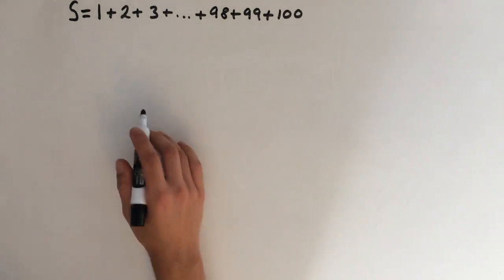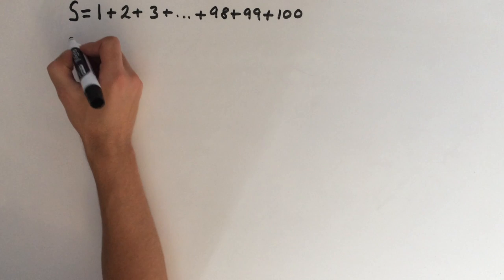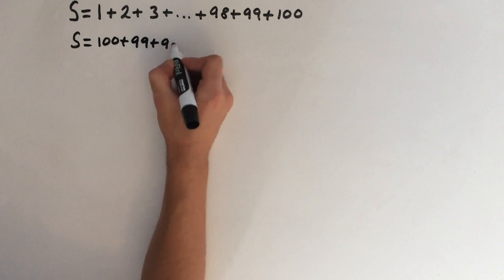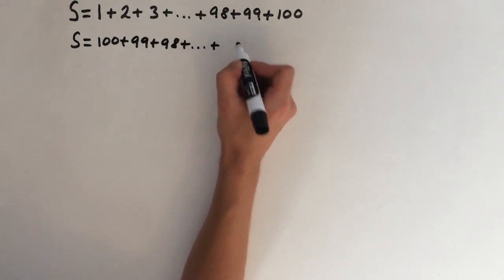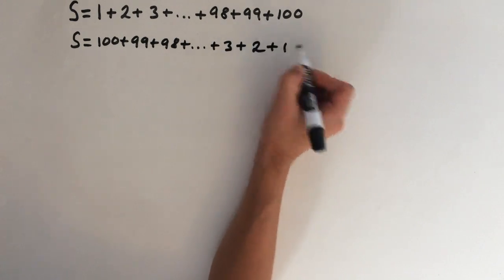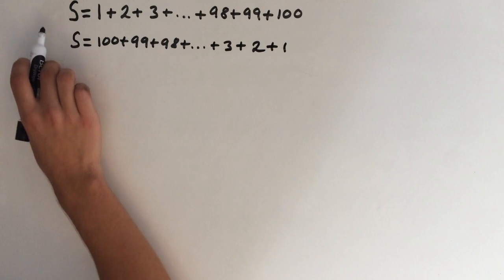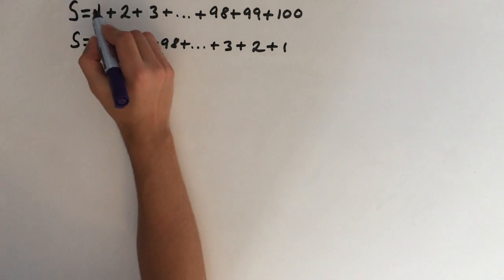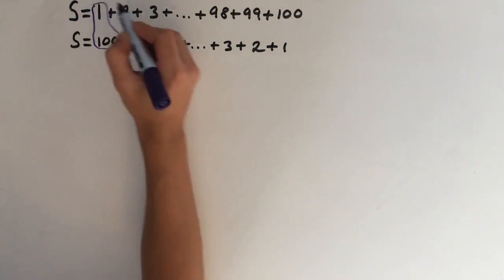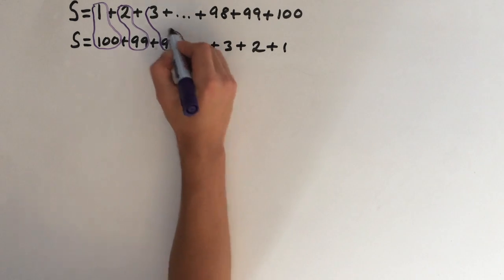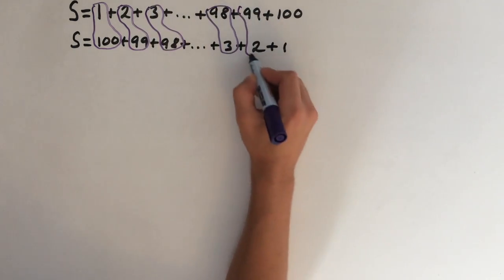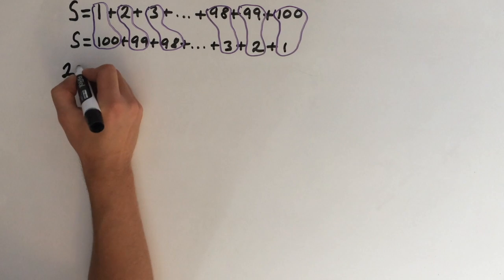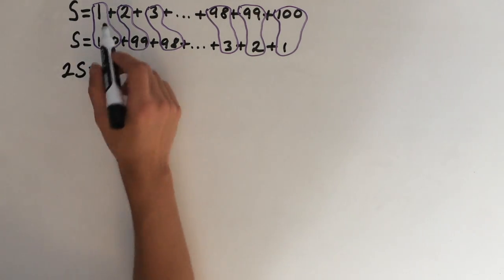The trick we use is writing the series out backwards: S equals 100 plus 99 plus 98 plus etc., all the way down to 3 plus 2 plus 1. Both of these series have the same sum, so we can add them together by pairing them up — first term with first term, second term with second term, and so on. On the left-hand side we get two lots of S.